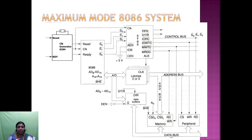In the maximum mode 8086 system, a numeric coprocessor such as the 8087 or another processor is interfaced with the 8086. The memory address bus and data bus are shared between the two processors. The control signals for maximum mode are generated by the bus control chip, the 8288. The three status outputs S0, S1, S2 from the processor are inputs to the 8288. The output of the 8288 bus controller provides signals DEN, DT/R, IOR (IO read), IOW (IO write), MEMW (memory write), and MEMR (memory read).